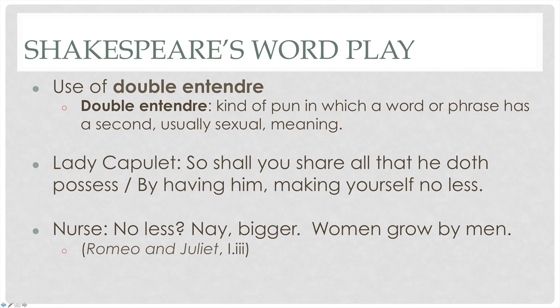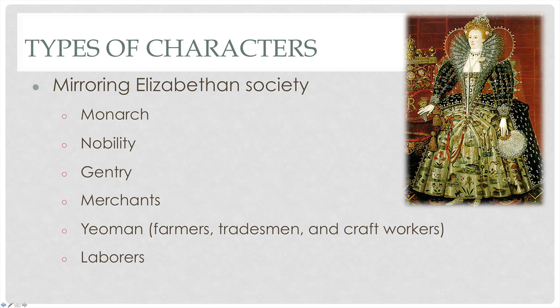Now the other thing we need to think about is that Shakespearean plays are going to mirror Elizabethan society in terms of the types of characters they have. Elizabethan society was pretty regimented — it was not really possible to move up the levels of society. Whatever you were born into, that's where you would stay. We're going to have the levels of class such as monarchs, nobility, gentry, merchants, yeoman — who are farmers — tradesmen, and laborers. This strict Elizabethan structure is going to be mirrored in the Shakespearean plays.